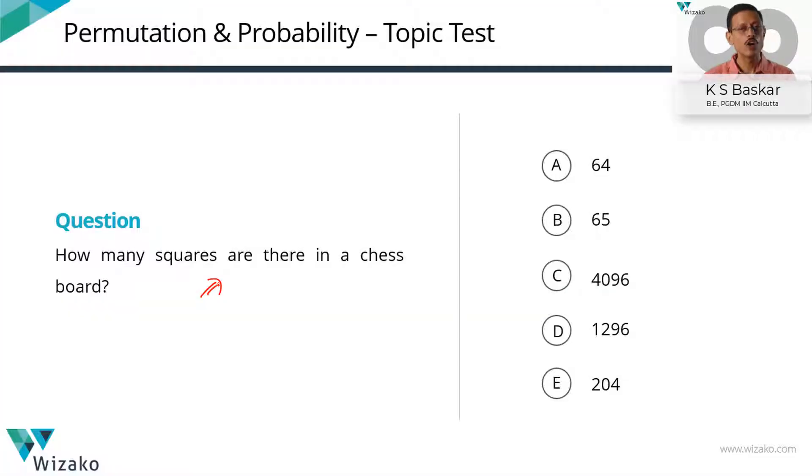These are classic questions. How many squares are there in a chessboard? The temptation is to go with choice A. I am just changing my choices because there's a large square. So I'm tempted to go with B. Let's check out whether A or B is the answer or is one of the other choices the answer? Let's get started.